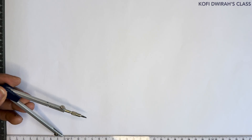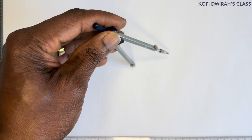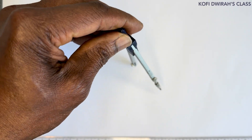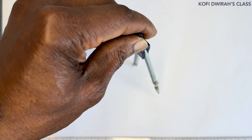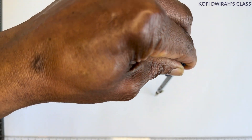We start by considering the radius of the circle. We have the radius set to five centimeters, which is 50 millimeters. With your compass, just draw a circle.